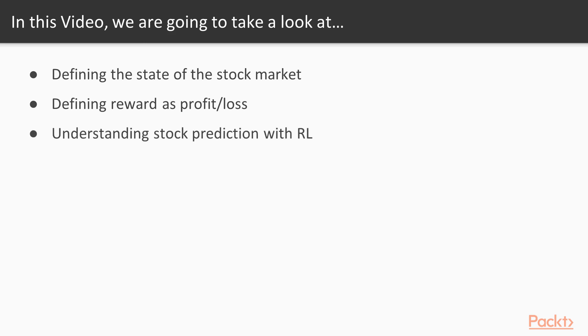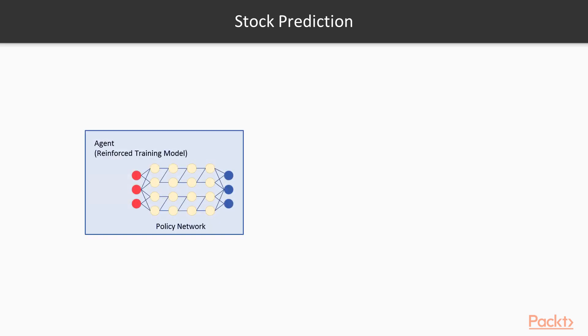Now let's look at how a reinforcement learning algorithm and model could look for this problem. On the left-hand side we have an agent that is a reinforcement-trained model, and we have a state. That model will use a deep learning neural network, and we will have a specific policy that, based on the output of the final layer of our deep learning network, will make a choice.